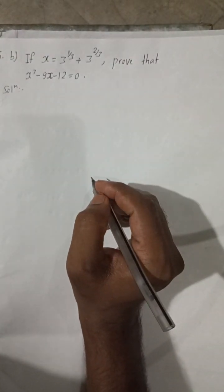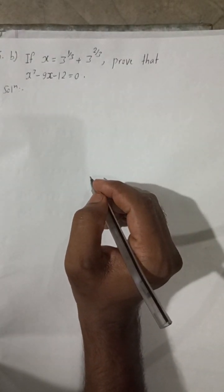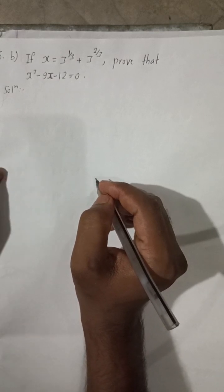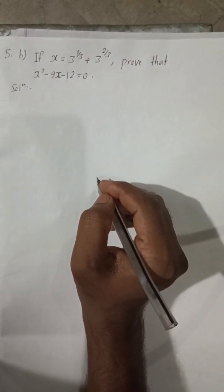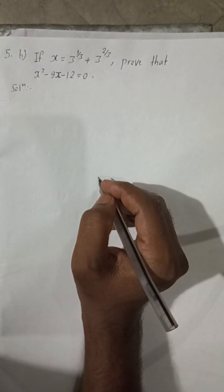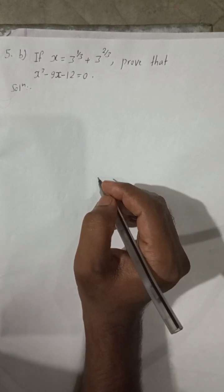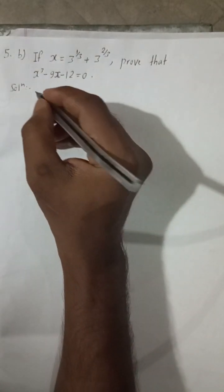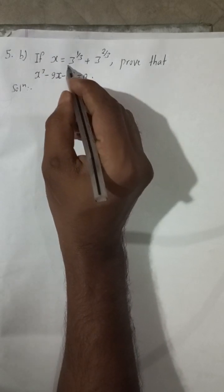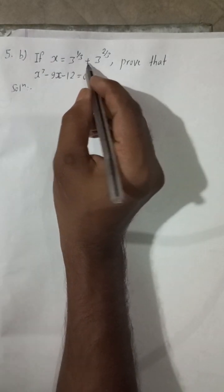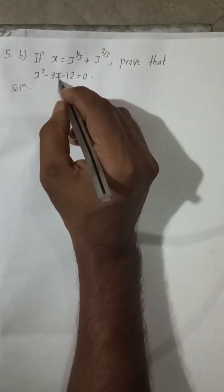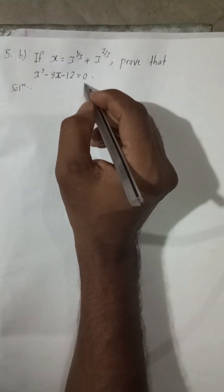Hello friend, welcome back to Bimalsarji YouTube channel. Now I will solve question number 5b from class 9 compulsory math. Given: if x is equal to 3 to the power 1 by 3 plus 3 to the power 2 by 3, prove that x cubed minus 9x minus 12 is equal to 0.